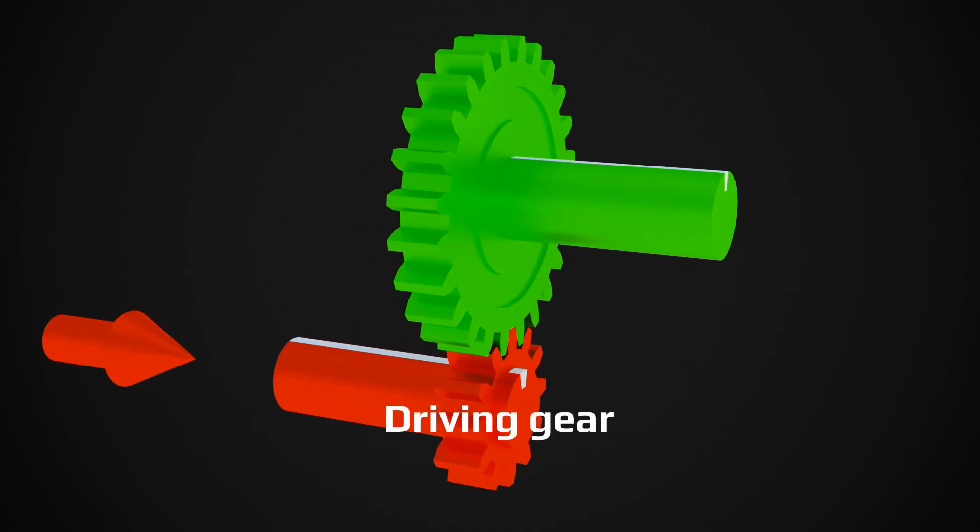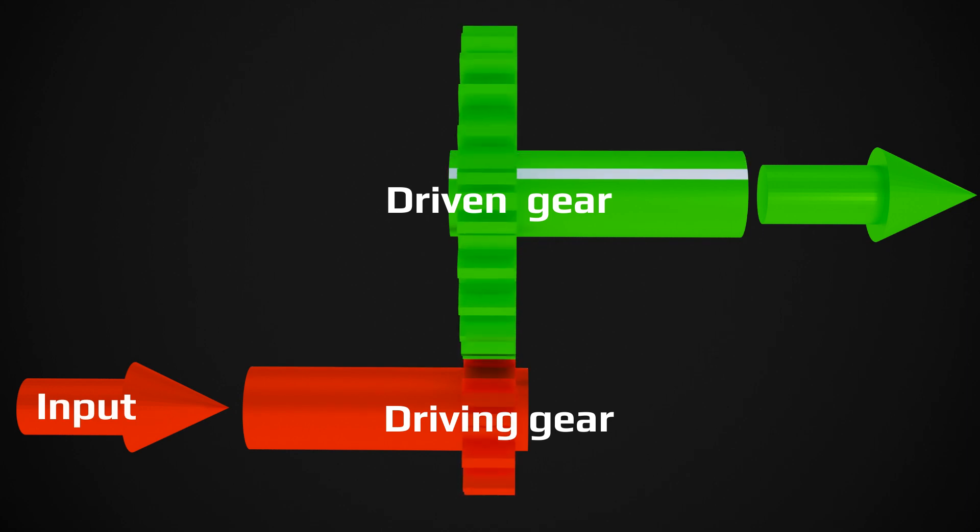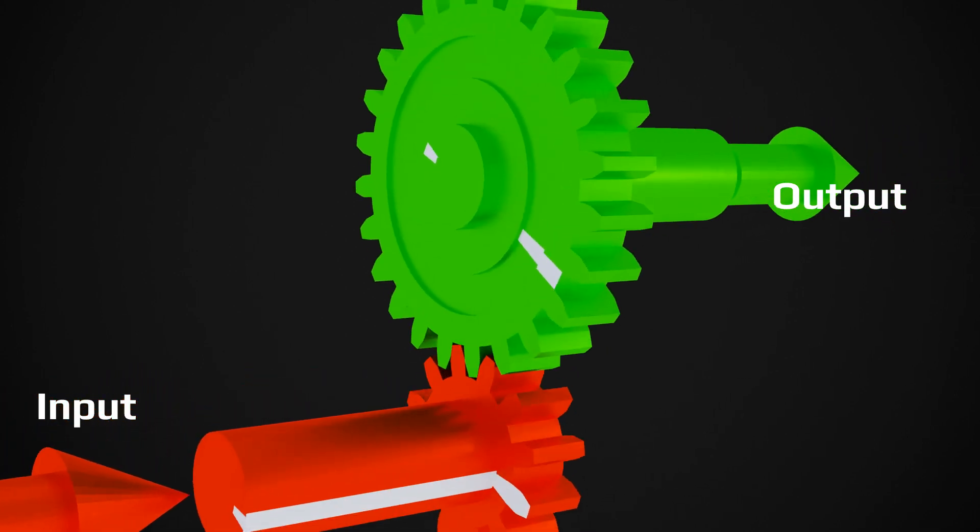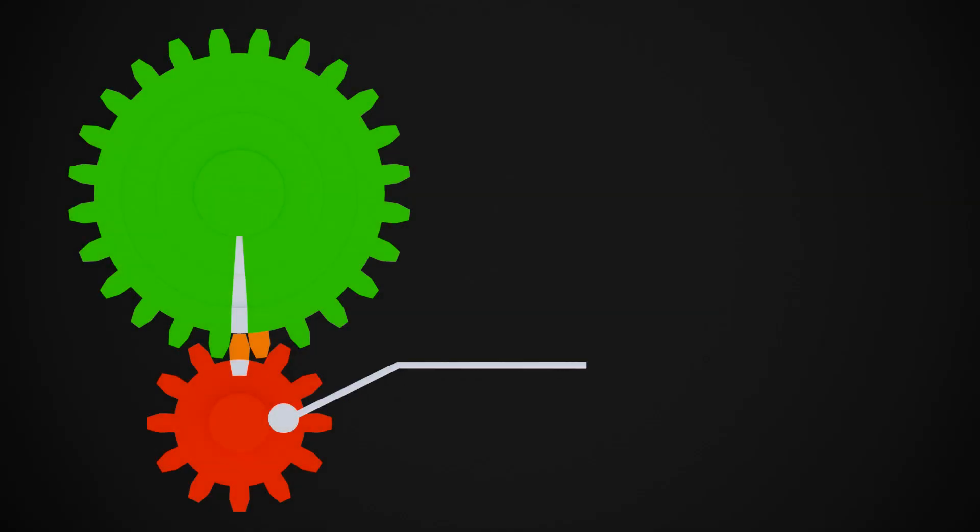In a simple gear mesh design, one rotating or driving gear transmits rotational motion to another gear called driven gear. Depending on pitch diameter or teeth number, it rotates at different rotational speed. This driver gear has 12 teeth and this driven gear has 24 teeth.